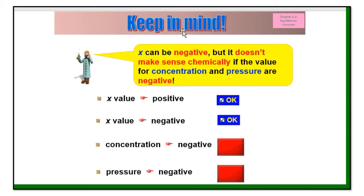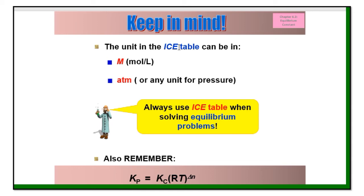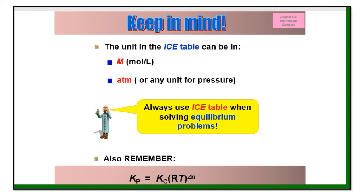For revision and summary: keep in mind that x can be negative, but it doesn't make sense chemically if the concentration or pressure values come out negative. So whether x is positive or negative, substitute and check — if the resulting concentration or pressure is negative, it's impossible. Also remember the unit in the ICE table: molar for concentration and atm for partial pressure. Always use the ICE table when solving equilibrium problems, and remember the relationship between Kp and Kc. Sometimes we also need to use PV equals nRT.